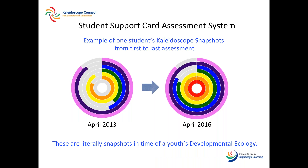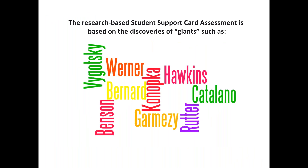Data from the Student Support Card derives from a cluster of surveys that measure the developmental ecology of a youth. The Institute for Community and Adolescent Resilience developed the assessment to measure the web of support that all kids need, using research from the best youth development and resiliency work in the world. Vygotsky, Werner, Bernard, Garmezi, Rudder, Benson, and Hawkins and Catalano are some of the giant shoulders upon whom we stand.